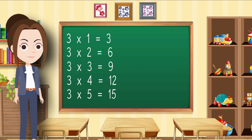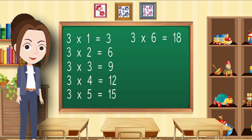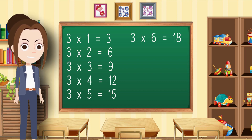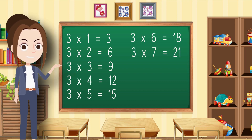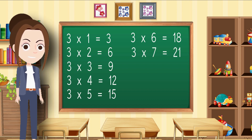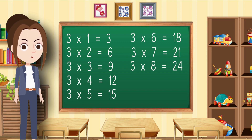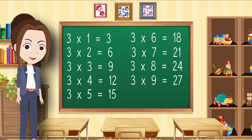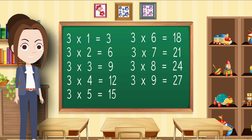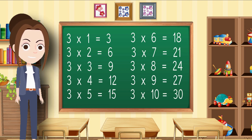3 6s are 18, 3 7s are 21, 3 8s are 24, 3 9s are 27, 3 10s are 30.